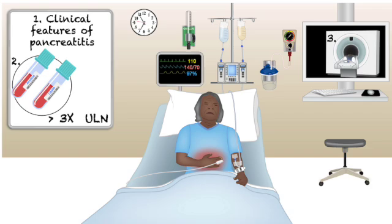A useful CT pearl: scroll down to the pelvis and look at the iliopsoas muscles. Are they bulky or thin and atrophied? This gives you a quick read on sarcopenia — muscle wasting indicating poor nutritional status or protein-energy deficiency — which tells you a lot about the patient's overall resilience and prognosis, especially in severe pancreatitis. Valuable information hiding in plain sight.